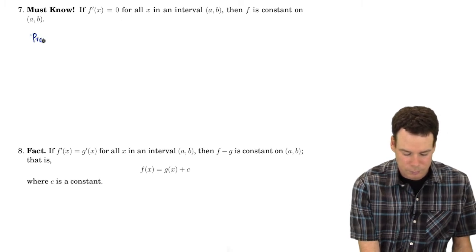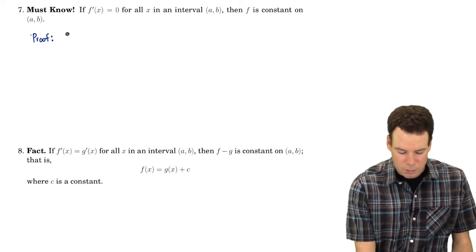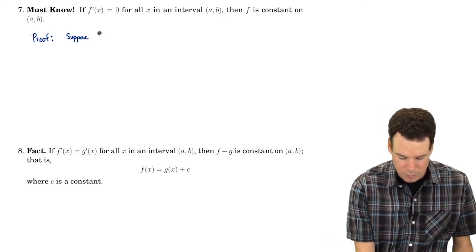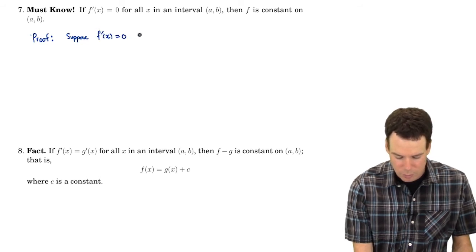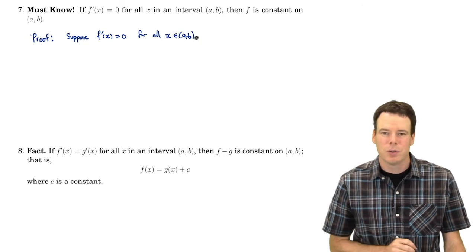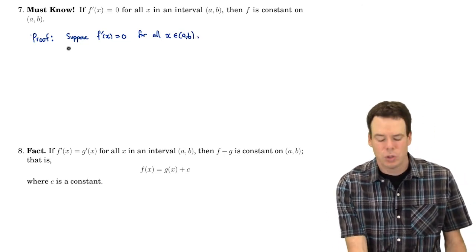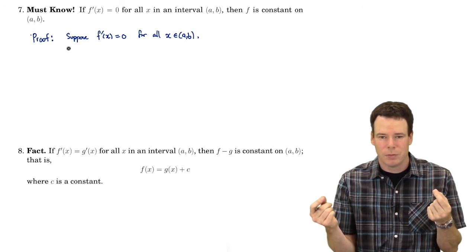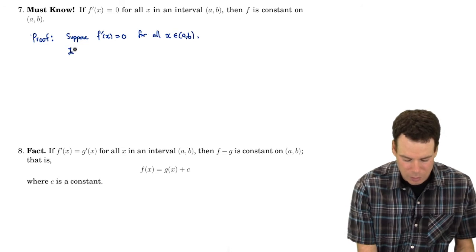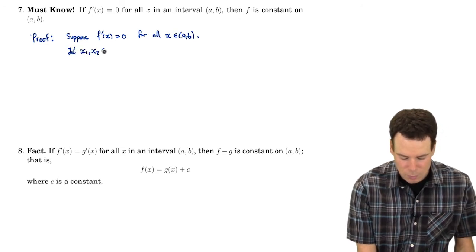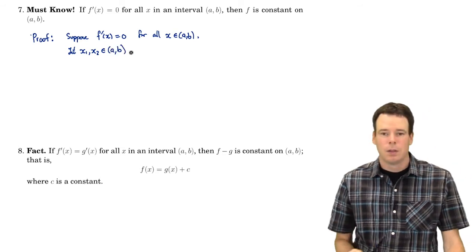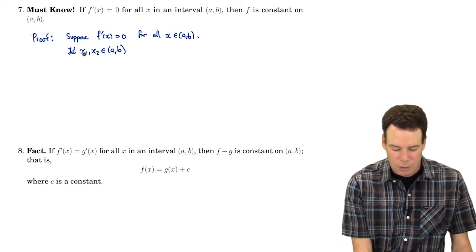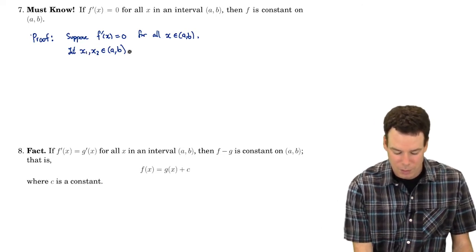Let's prove this. Our hypothesis is that f'(x) = 0 for all x in the interval (a,b). To show the function is constant, all we need to show is that the function values at any two inputs from that interval have to be the same. So let x1 and x2 be any values in the interval (a,b). I'm going to use x1 and x2 as the endpoints for the interval to which I apply the mean value theorem.